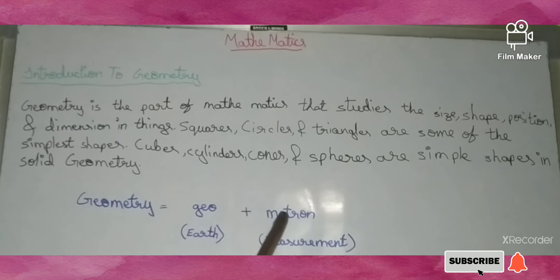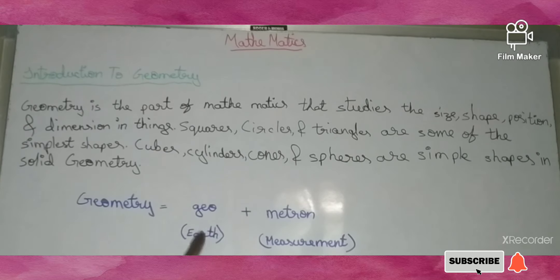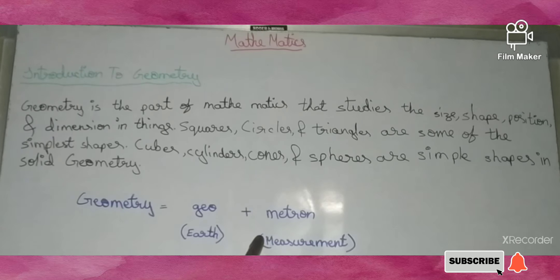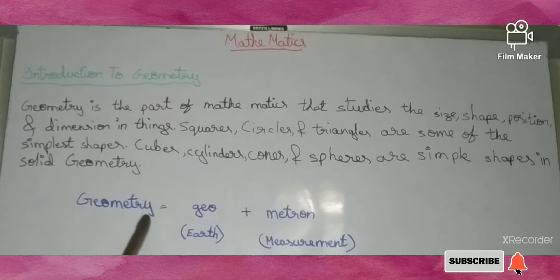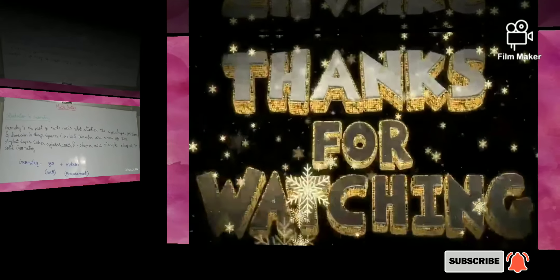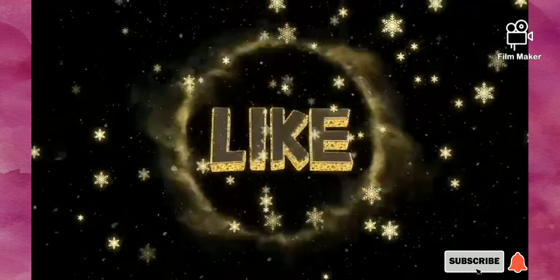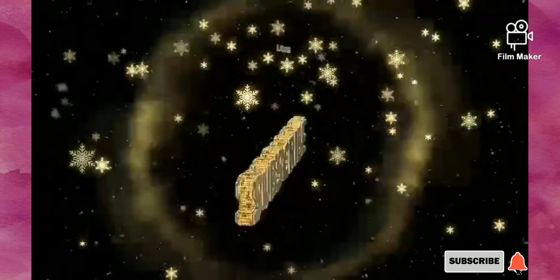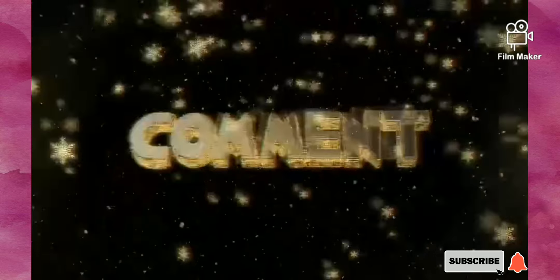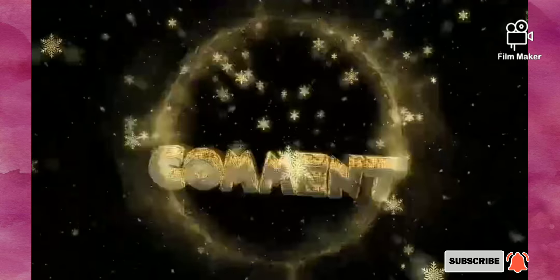So here I will split the word geometry for you. Geometry equals Geo plus Metron. Geo means earth and Metron means measurement. This means that geometry means earth measurement.